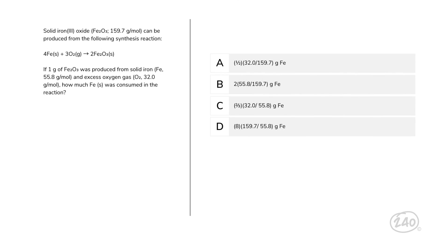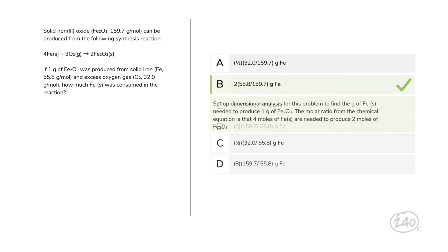Next up, Domain 3, Chemistry. Solid iron(III) oxide can be produced from the following synthesis reaction: four moles of solid iron plus three moles of oxygen gas yields two moles of iron(III) oxide. If one gram of iron(III) oxide was produced from solid iron and excess oxygen gas, how much solid iron was consumed in the reaction? Set up dimensional analysis: first, convert grams of iron(III) oxide to moles using the molar weight. Then convert to moles of solid iron using the molar ratio in the equation. Lastly, convert moles of iron to grams of iron using its molar weight. Your answer should be B.